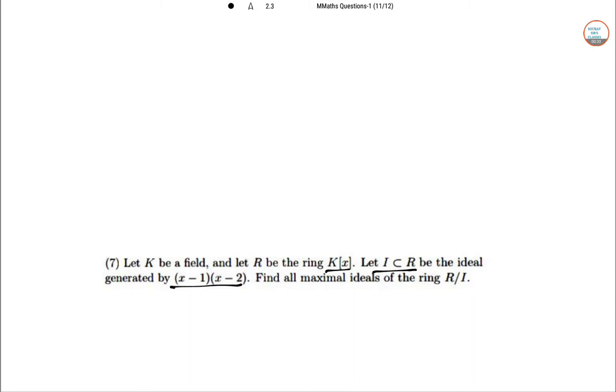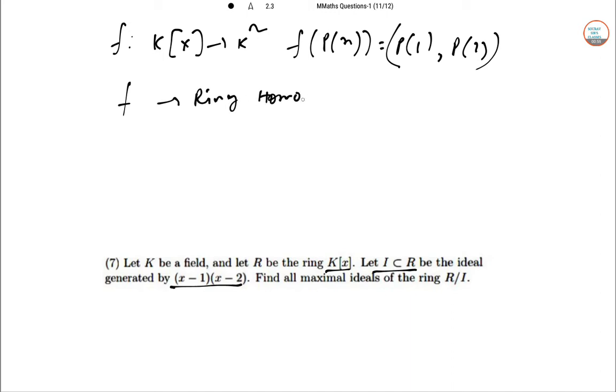Consider the mapping F: K[x]→K² given by F(P(x)) = (P(1), P(2)). F is a ring homomorphism, and the kernel of F coincides with I.